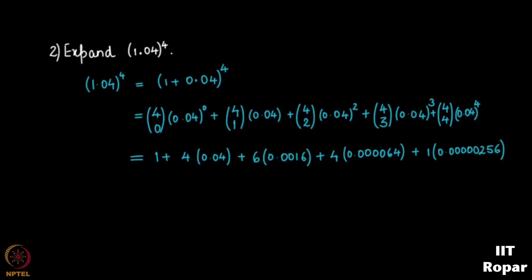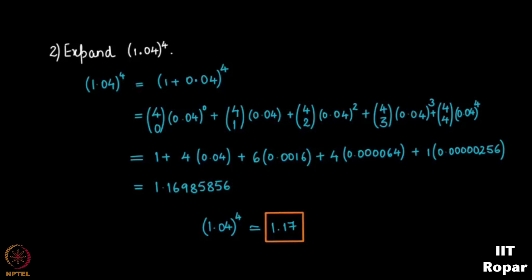After multiplication and simplification we get 1.16985856, which rounds to 1.17. So 1.04^4 ≈ 1.17. Binomial theorem can be used for such approximations.